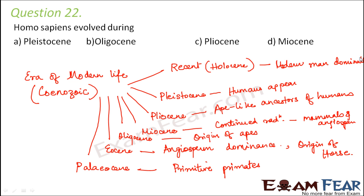So the period when Homo sapiens evolved, or humans appeared, was the Pleistocene. Therefore option A is the correct answer.